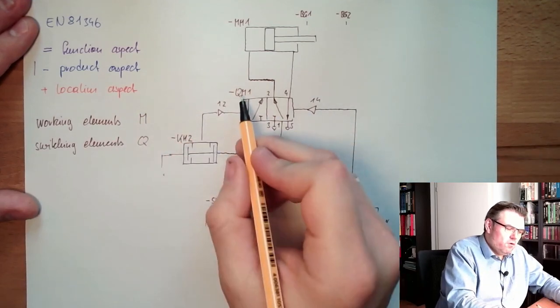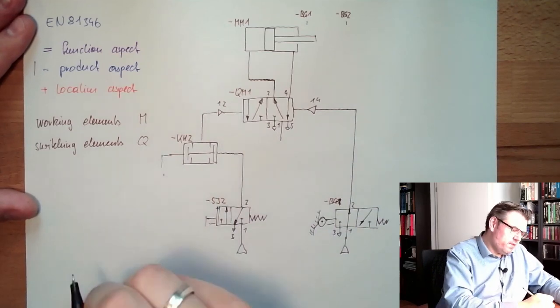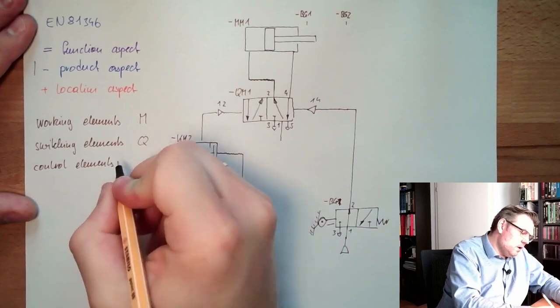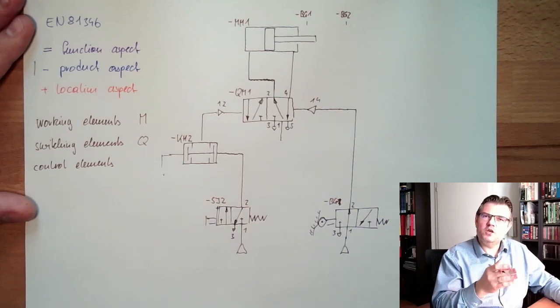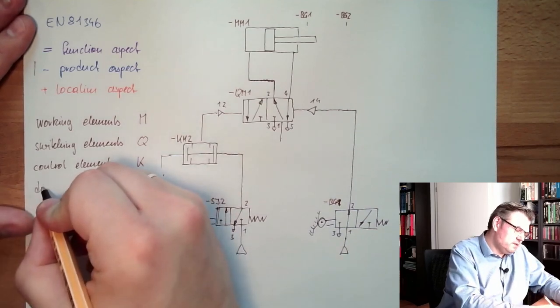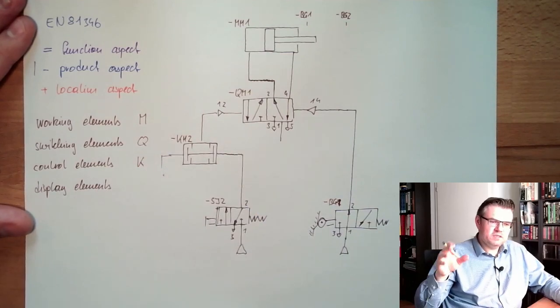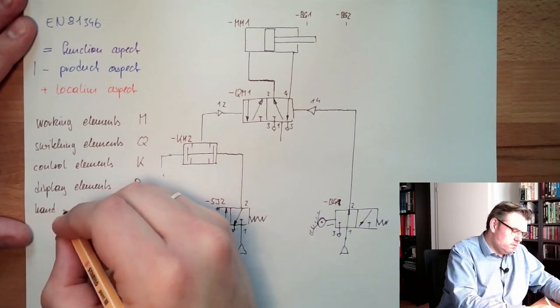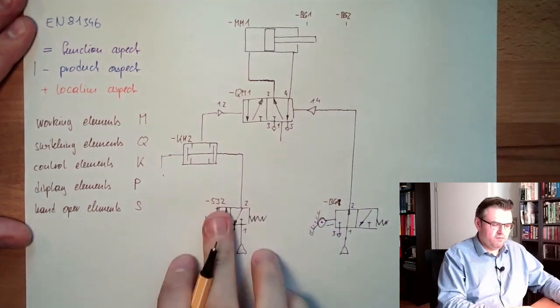They are really switching the energy to the working element. Then there are control elements. Those control elements do not really switch the energy, they're just switching information, informational content. These are the Ks. Then there are for instance displays, display elements like lights or displays, these are the Ps. And then there are hand operated elements, these are the Ss.